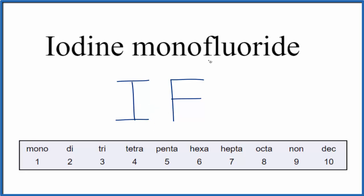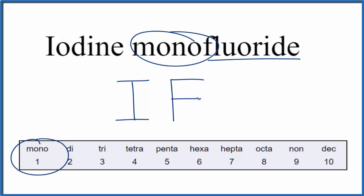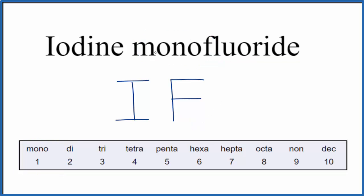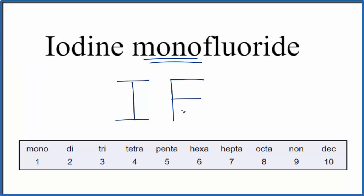But for the second one, if we have just one, we call it mono. So we have one fluorine, and we don't write the one. You use mono with the second element if there's only one of them, but if you only have one of the first, you don't put mono there. So the formula for iodine monofluoride is IF.